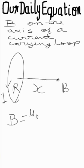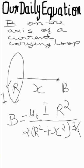This B is equal to μ₀ I R² upon 2(R² + X²)^(3/2). So what is its direction?